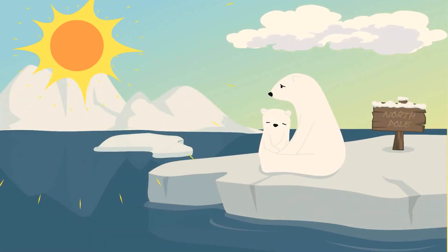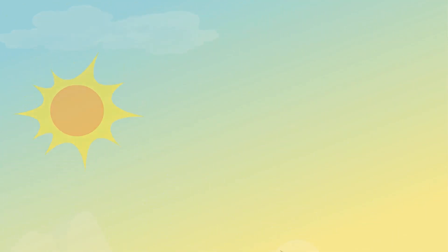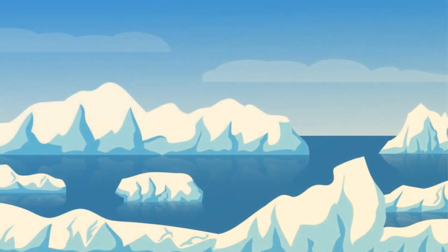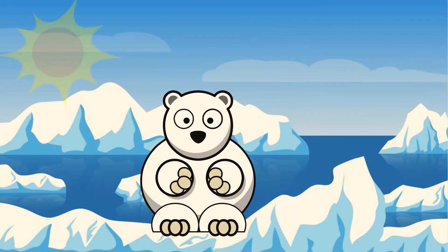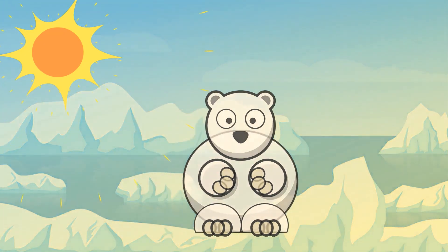Sea Level Rise. Global sea level has risen by about 8 inches since reliable record-keeping began in 1880. It is projected to rise another 1 to 8 feet by 2100. This is the result of added water from melting land ice and the expansion of seawater as it warms. Sea level rise will continue past 2100 because the oceans take a very long time to respond to warmer conditions at the Earth's surface. Ocean waters will therefore continue to warm, and sea level will continue to rise for many centuries at rates equal to or even higher than those of the current century.